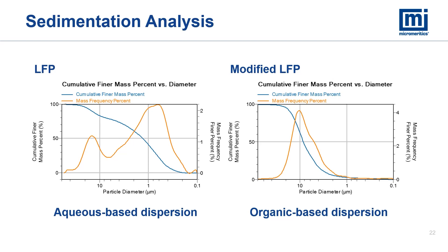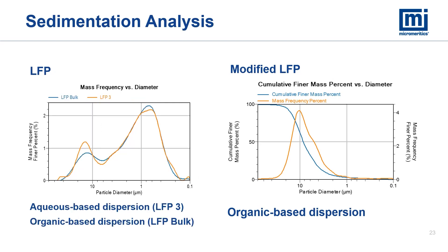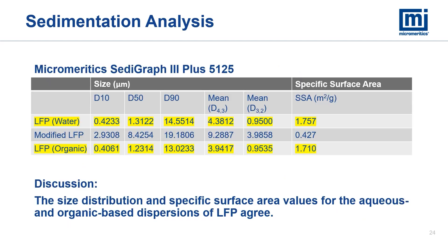Both were treated with ultrasonics. To confirm that the organic dispersion did not influence the reported particle size distribution, the LFP was dispersed again using the exact same organic preparation as the modified LFP. You can see the overlay of the aqueous and organic dispersions of the LFP on the left that show very little difference in the amount of fines. Reviewing the same statistics, the LFP aqueous and organic dispersions agree — D10, D50, and D90 values are in the same ballpark, as are the mean values and specific surface area. We can conclude that the dispersion did not affect the reported size results, and that the fine particles present in the LFP are not present in the modified LFP.